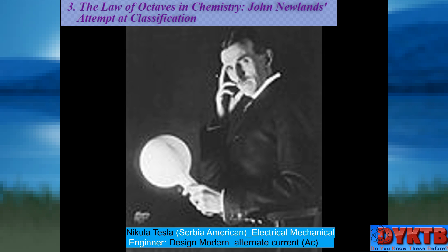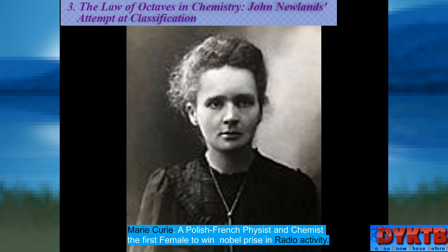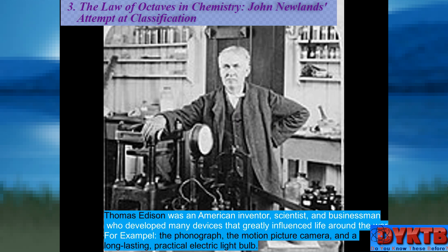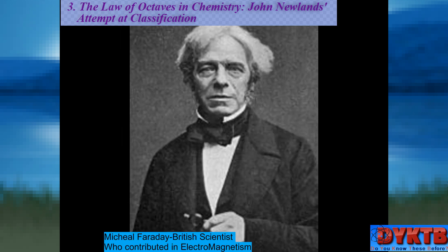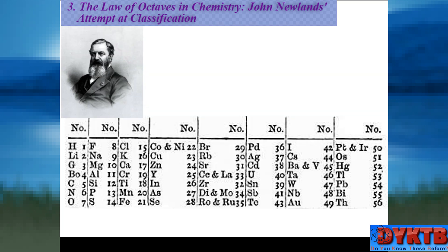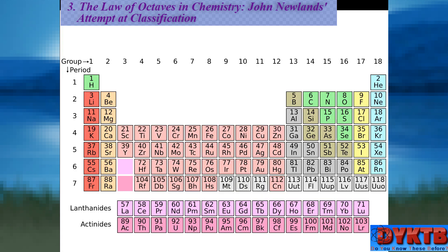The 19th century witnessed a period of rapid expansion in our understanding of the natural world, and one area that captured the imagination of scientists was the classification of elements. In the midst of this fervor, English chemist John Newlands proposed a daring idea — a law of octaves that sought to organize the known elements into a coherent system. While this initial attempt at classification faced skepticism, it contributed to the eventual development of the modern periodic table and the consolidation of our understanding of the building blocks of matter.